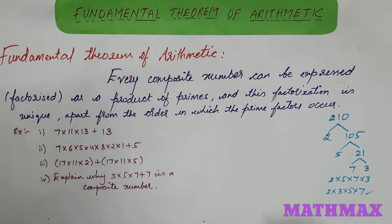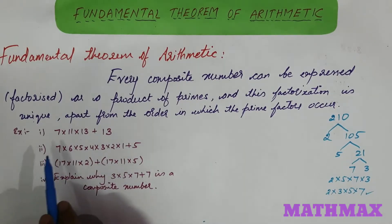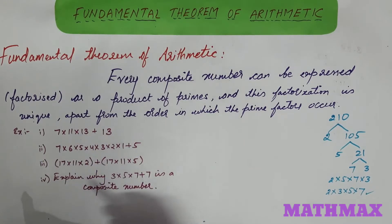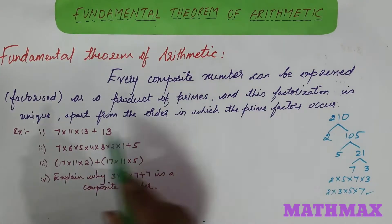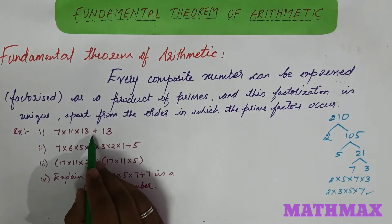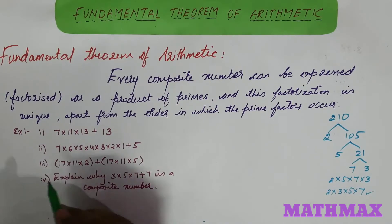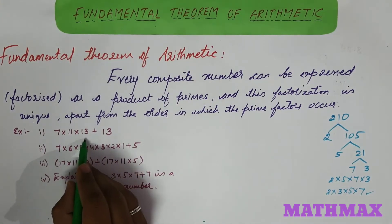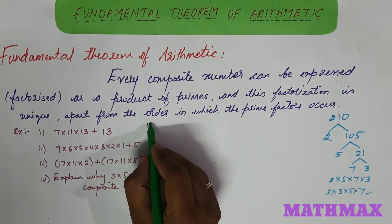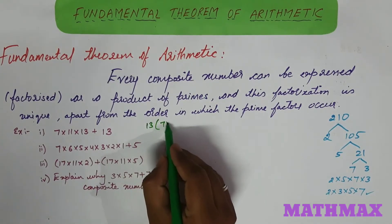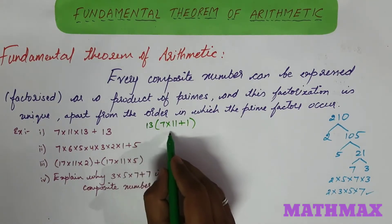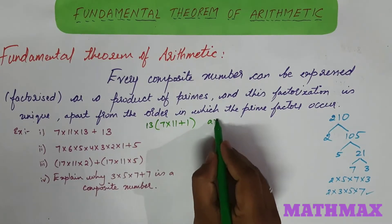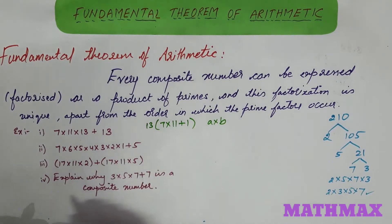Here we have a few textbook examples to solve. Consider 7 into 11 into 13 plus 13. As per our definition, a composite number can be expressed as a product of primes, and we need to write this as a product of two numbers. Observing that 13 is common, we can write 13 into (7 into 11 plus 1). Calling this A and B, the expression is in the form A into B, so it is a composite number.